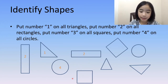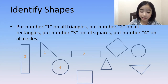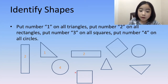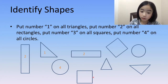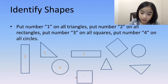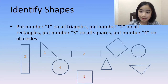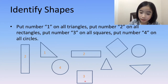Now, let's look at this shape down here. It has four corners and four equal sides. So, this is a square. Let's put the number three on this square.